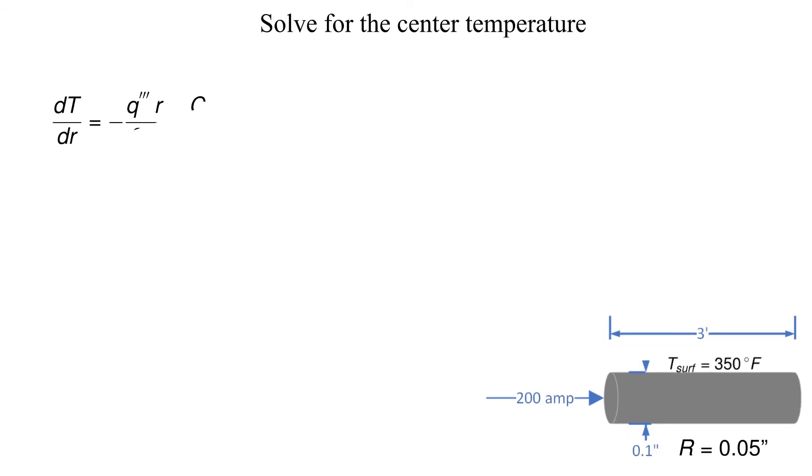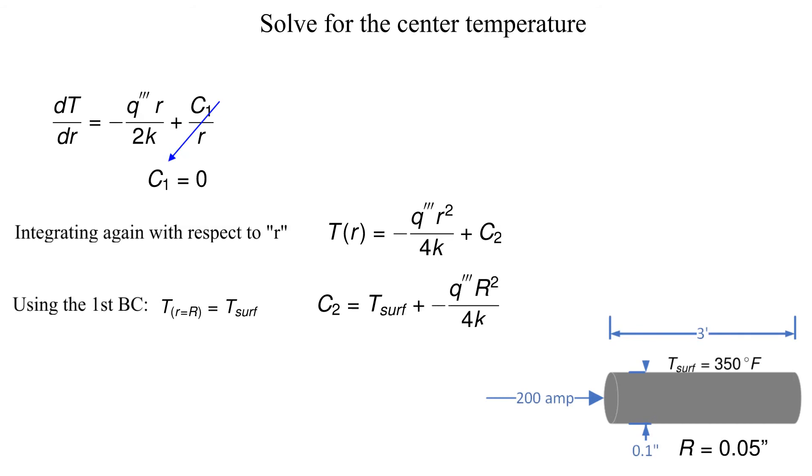Now that we know that c1 is equal to zero, let's simplify the equation and integrate again with respect to the radius. The integration results in another integration constant denoted as c2. Now we will use the first boundary condition that the temperature at the outer surface is known and solve for c2.